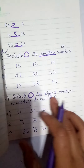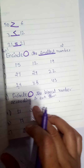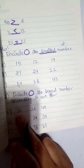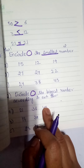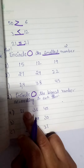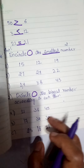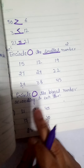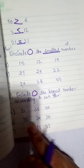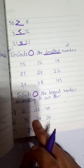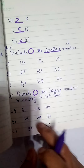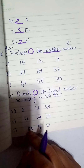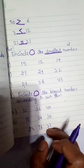Now circle the biggest number. First set: twenty-one, twenty-six, forty-five — you have to circle which one is biggest. Then seventeen, thirty-four, thirty — guess which one is biggest. And twenty-three, eighteen, twenty-nine.